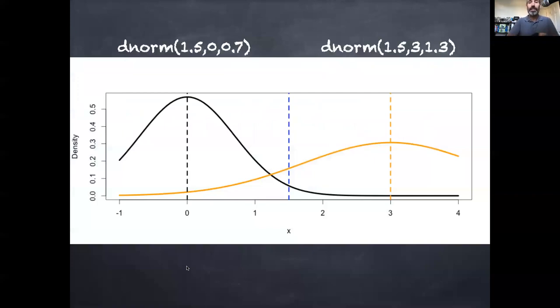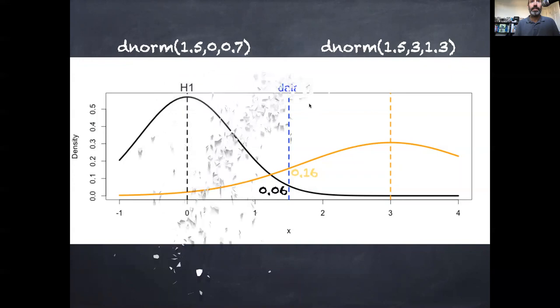So when I introduced likelihood, I started with this simple example. If I had two normal densities with different means, one at zero, one at three, and I had a data point in the middle at 1.5, I could ask what's the probability of hypothesis one having generated this data point on a specific mean and standard deviation? What's the probability of hypothesis two having generated that same data point under its choice of mean and standard deviation?